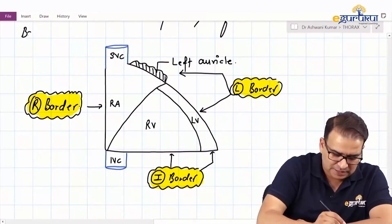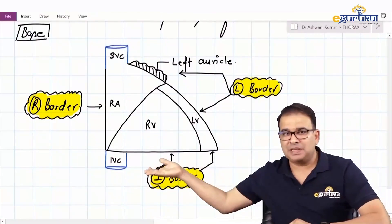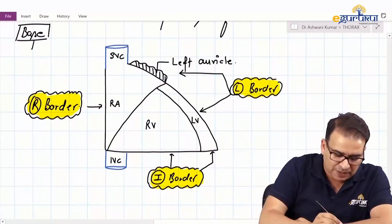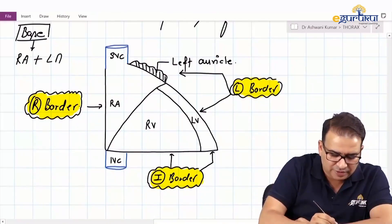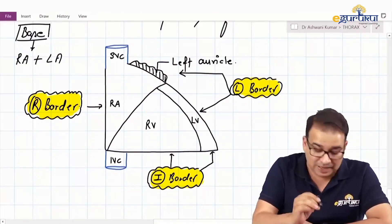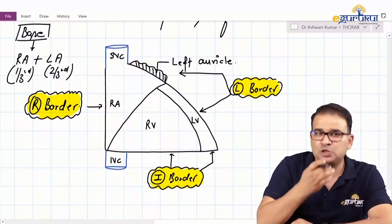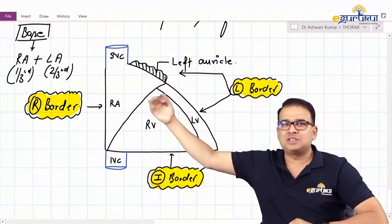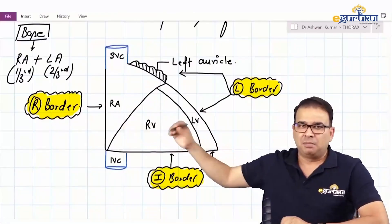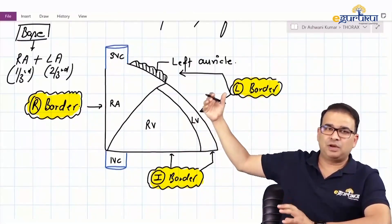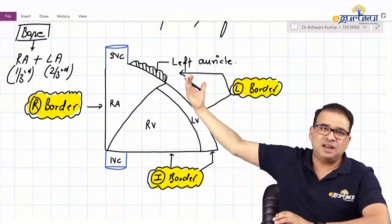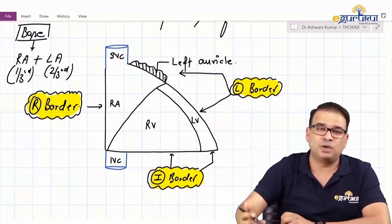Base of the heart — the base is the posterior surface, not the diaphragmatic surface. The base of the heart is on the posterior surface and is contributed by both the right atrium and the left atrium. The left atrium contributes two-thirds of the base, and the right atrium contributes only one-third. The majority of the right atrium can be seen from the front, but no part of the left atrium is visible from the front — only the left auricle can be seen. So the major part of the left atrium is present behind, contributing to the base.